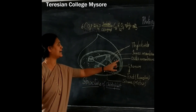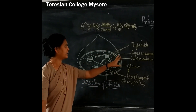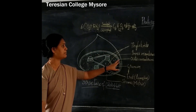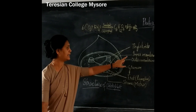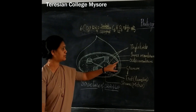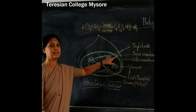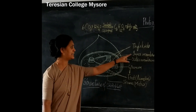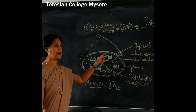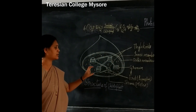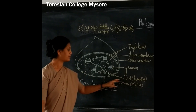The chloroplast has the double membrane — the outer membrane and the inner membrane. In between the outer membrane and the inner membrane, there is a space. Inside the inner membrane, there is a large space called as the stroma or matrix.